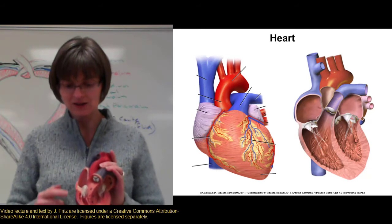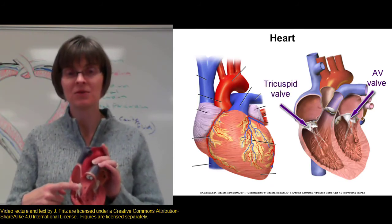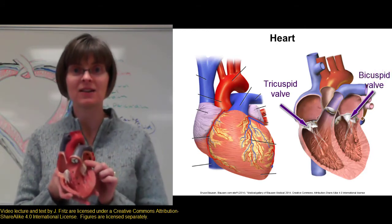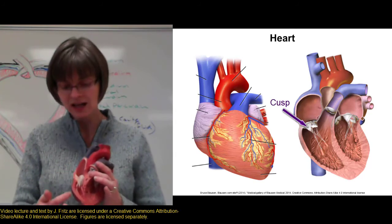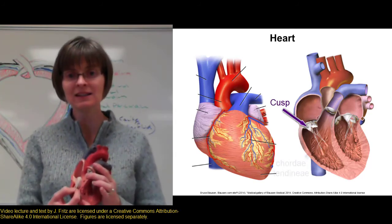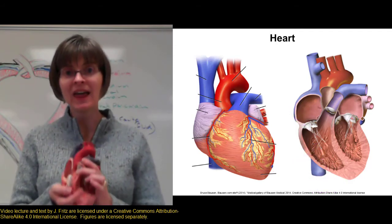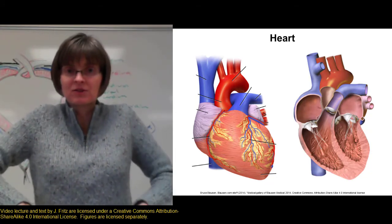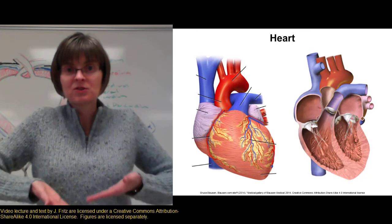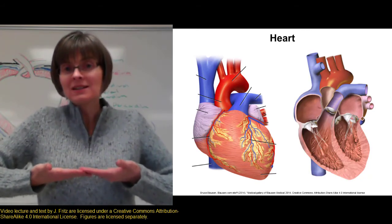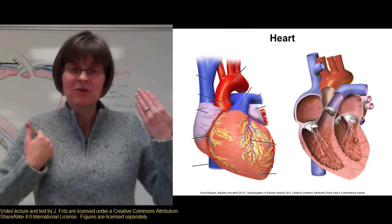We have two pairs of valves. We have AV valves — atrioventricular valves — found between the atria and the ventricles. We have the tricuspid valve on the right side of the heart, and the bicuspid valve on the left side. These valves have cusps, which are little flaps of connective tissue that swing up and block the opening to the atria. The cusps are connected by the chordae tendinae to the papillary muscles at the bottom of the ventricles. When the ventricles are relaxed, the cusps hang down and the valve is open, allowing blood to flow from the atria into the ventricles. When the ventricle contracts, pressure causes the cusps to swing up and block the path to the atria. The chordae tendinae and papillary muscles hold the valve closed so blood doesn't flow backwards into the atrium.